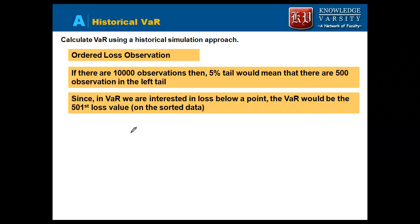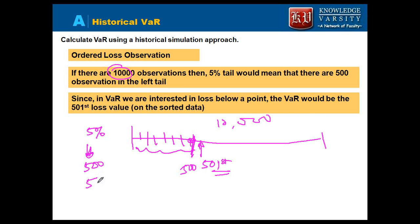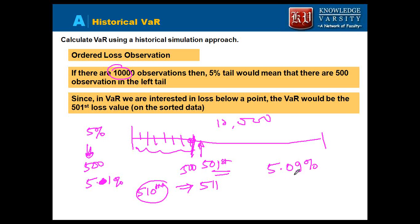For example, with 10,000 returns ordered, the 500th observation is identified and the VaR is taken as the 501st element. At 5% VaR the count is 500 observations; at 5.1% it would be 510 observations, and the VaR would be the 511th value. Similarly, at 5.019%, the 510th value would be the VaR estimate.